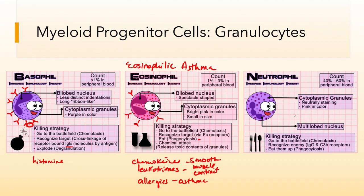Neutrophils are the most common white blood cell found in circulation. They have cytoplasmic granules that release some toxins and chemokines for attraction of antigens. They go directly to the site of infection and are the most phagocytic cells in the body — they consume and break down pathogens as quickly as possible and are quite aggressive.